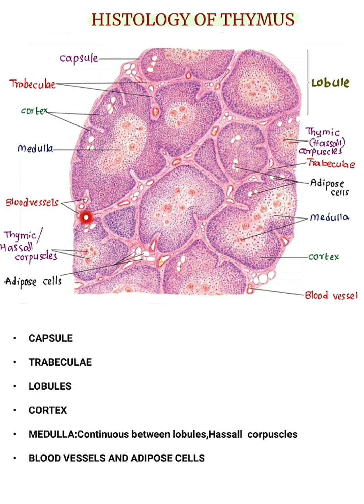Lobules. Trabeculae extend into the interior of the organ and subdivide the thymus gland into numerous incomplete lobules. Each lobule consists of an outer dark-staining cortex and an inner light-staining medulla.